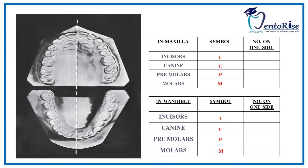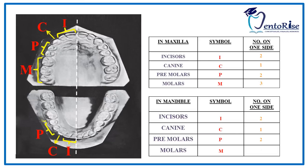One thing to note: whenever we write the dental formula, we count the teeth on one side only. This means in the permanent dentition on one side, the number of incisors will be 2 in the maxilla and 2 in the mandible, canines will be 1 in the maxilla and 1 in the mandible, premolars will be 2 in the maxilla and 2 in the mandible, and molars will be 3 in the maxilla and 3 in the mandible.